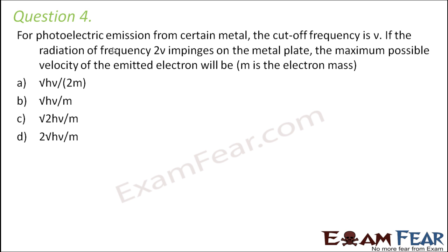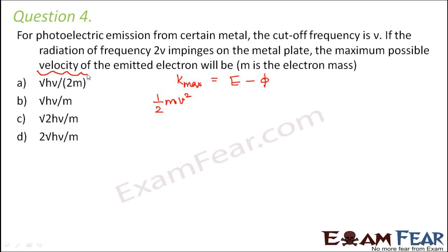Question number 4. For photoelectric emission from a certain metal, the cutoff frequency is nu. If the radiation of frequency 2-nu impinges on the metal plate, the maximum possible velocity of the emitted electron will be? So first let us make use of the photoelectric equation: K-max is equal to E minus phi. So what would be the maximum kinetic energy of the electrons? It would be given by half mv squared, because here we are bothered about the velocity of the emitted electron.